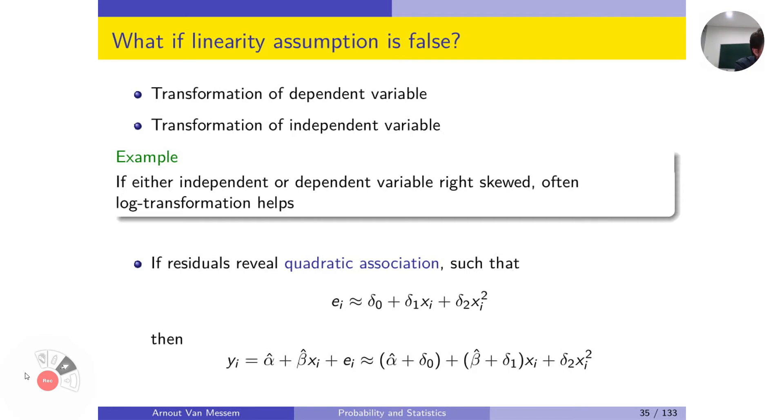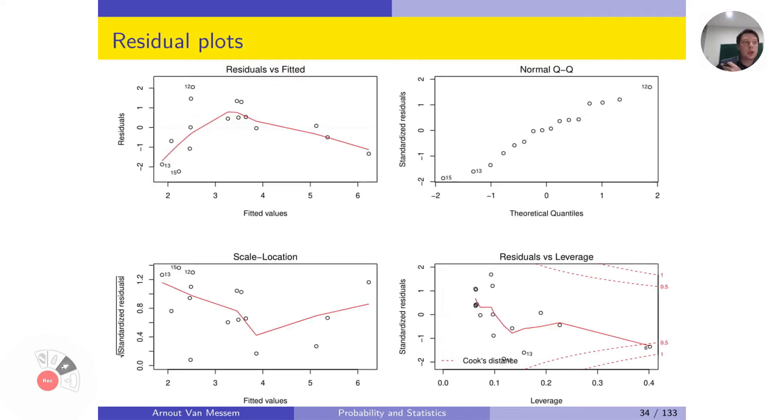Another option next to transformations might be to look at higher order regression. So assume that the residuals reveal a quadratic association, which was the case in our example. So we here see a quadratic association.